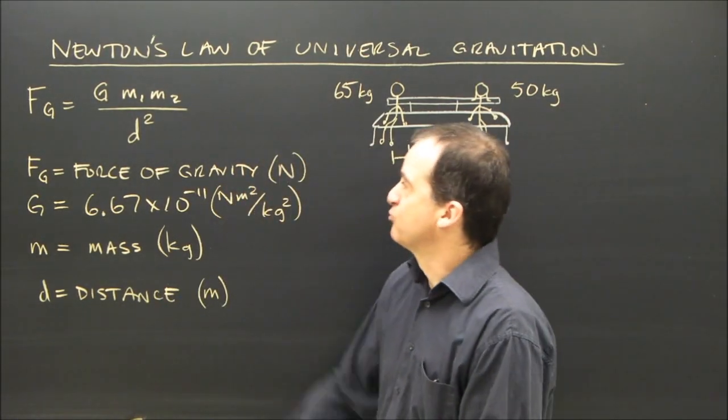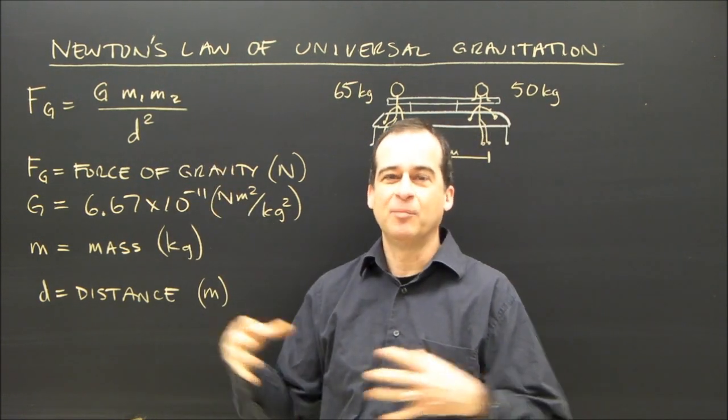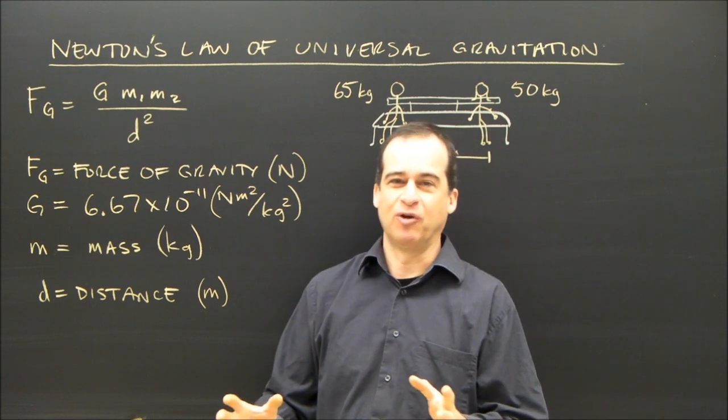One of Newton's greatest achievements was figuring out this formula. This is a formula that calculates how much gravity there is between objects. All objects have gravity.